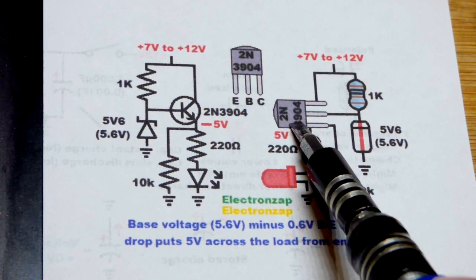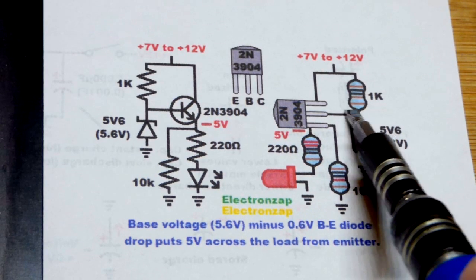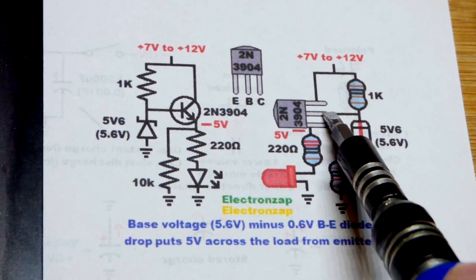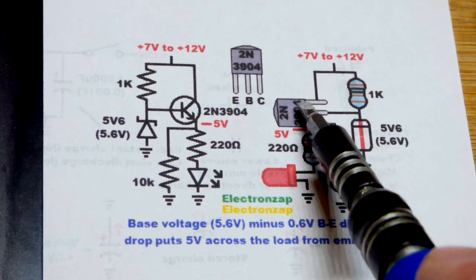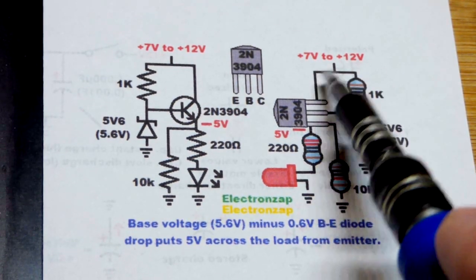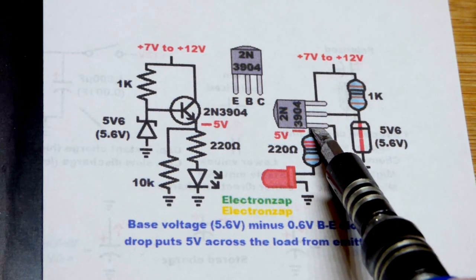So we will just take a transistor. We take that Zener voltage and give it to the base of the transistor. So now that will transfer down here. You do need current flowing through the transistor to do so. So you need that connection. We'll come back to that in a little bit.